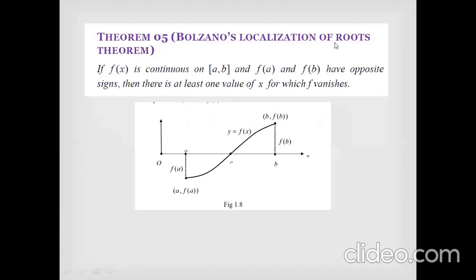Next is the Localization of Roots Theorem. If f(x) is continuous on the closed interval [a, b] and f(a) and f(b) have opposite signs, then there is at least one value of x for which f vanishes. Here f(a) is negative (below the real line) and f(b) is positive.